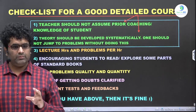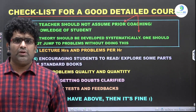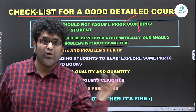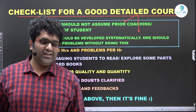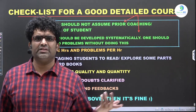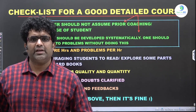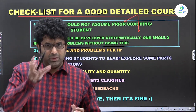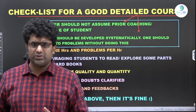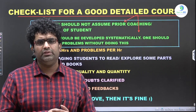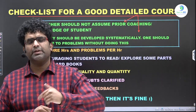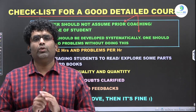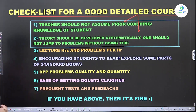DPP problems — quantity and quality — are another key point. In some cases the quantity is too high or too low, or the quality is not good, with repetitive problems on a single concept. Some concepts may be completely ignored, and irrelevant content can appear. An efficient, experienced teacher ensures the DPP is wholesome, covers multiple models of questions, has increasing difficulty levels, has no unnecessary conceptual repetition, and leaves no concept out.